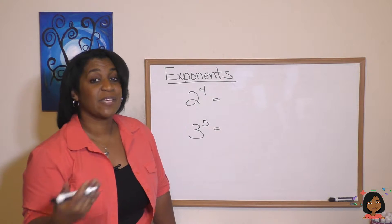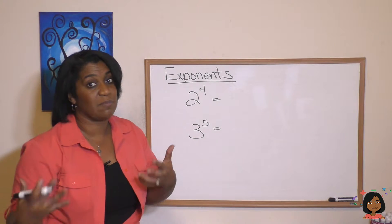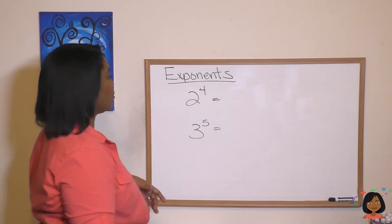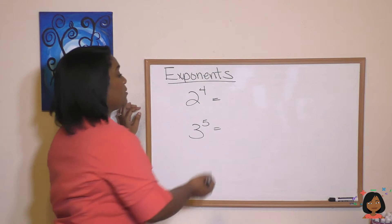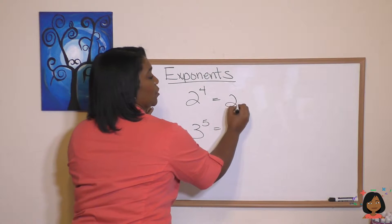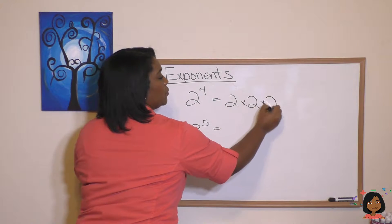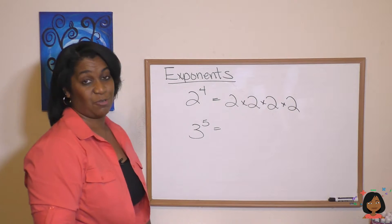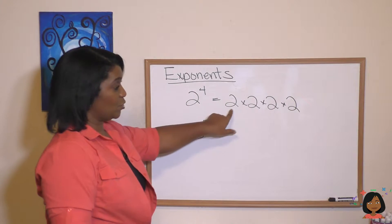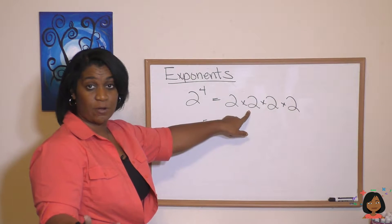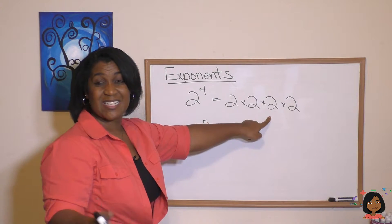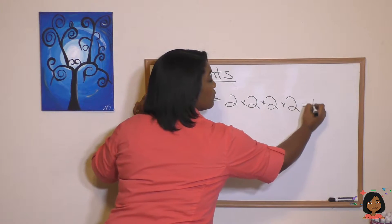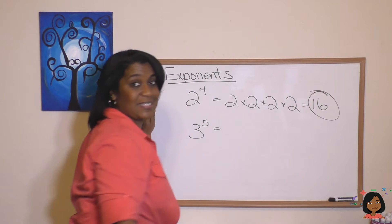Here's two problems that have exponents. First, what do they mean? Then we'll figure out the actual numeric answer. Two to the fourth means two times two times two times two. Now let's do the math: two times two is four, four times two is eight, eight times two is sixteen. So two to the fourth equals sixteen.